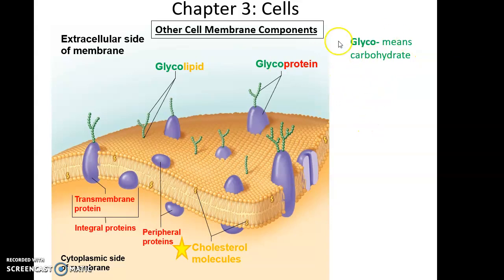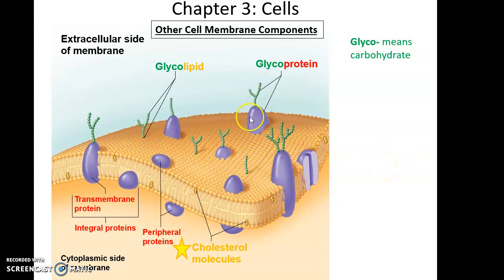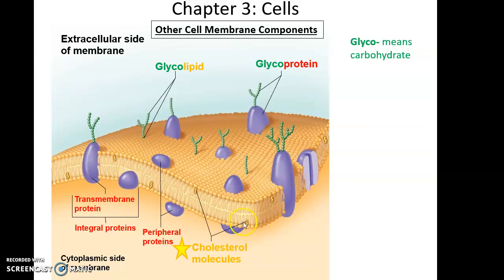There are also carbohydrate groups associated with the cell membrane. These carbohydrates are usually attached to other compounds, giving us glycoproteins — proteins with carbohydrates attached — and glycolipids — carbohydrate groups attached to fatty acid chains. Glycolipids and glycoproteins always have their carbohydrates facing toward the extracellular side. Also embedded within the cell membrane are cholesterol molecules, which intercalate into the membrane and give it additional rigidity. We produce all the cholesterol we need, and at the right level it is beneficial.